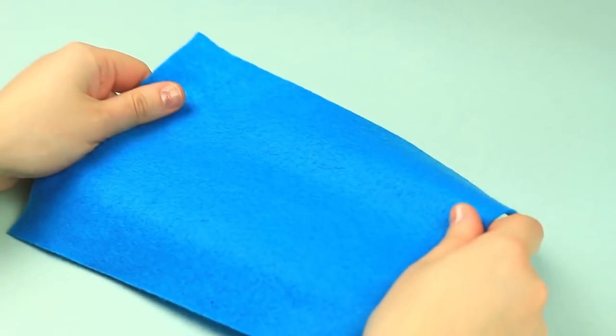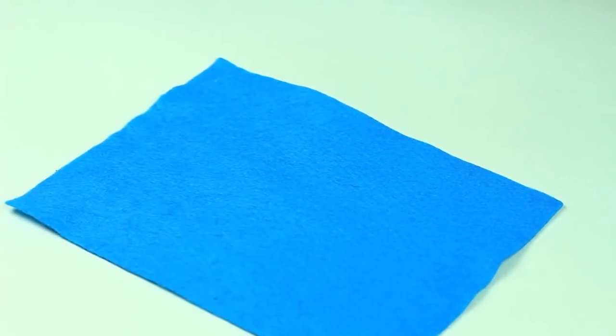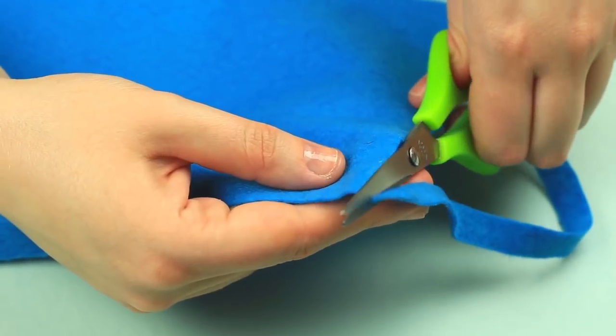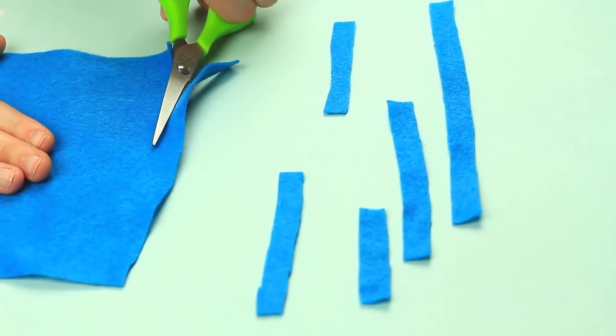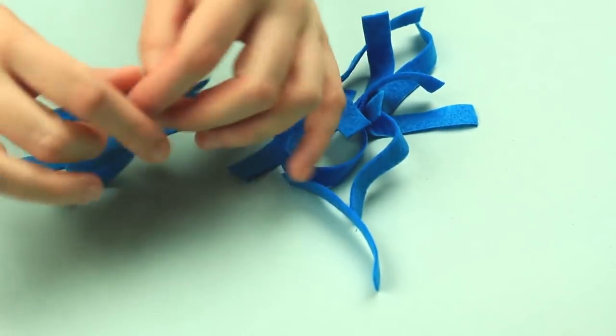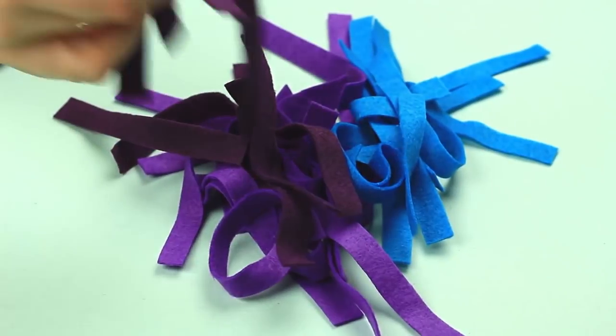Let's make a felt necklace in cool shades first. Take a piece of felt and cut out half inch strips of various length. Make several of the same details of other colors.